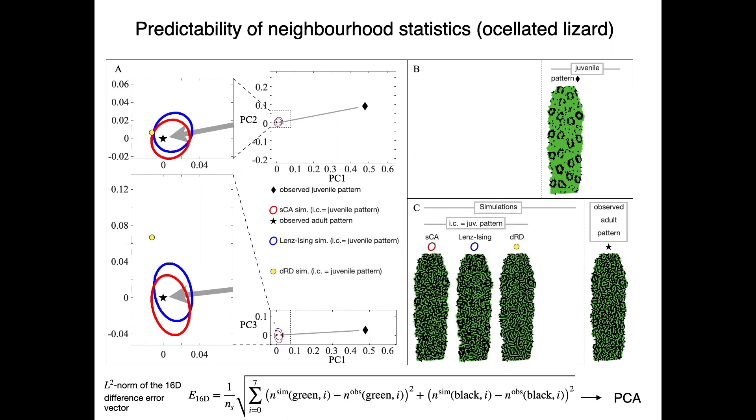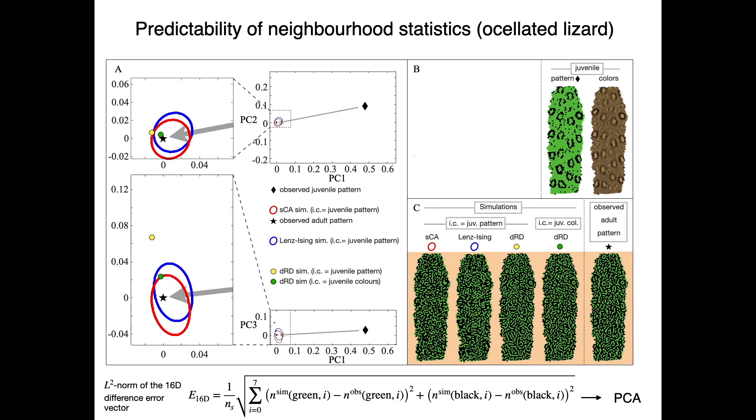The RD simulation, starting from real juvenile colors, produces yet a smaller error. In conclusion, the three models robustly predict nearest neighbor statistics, hence the general labyrinthine look of real adult patterns.